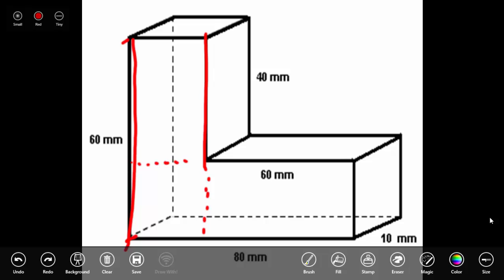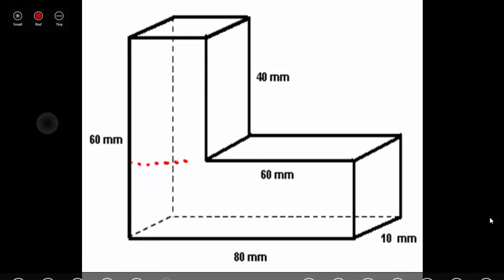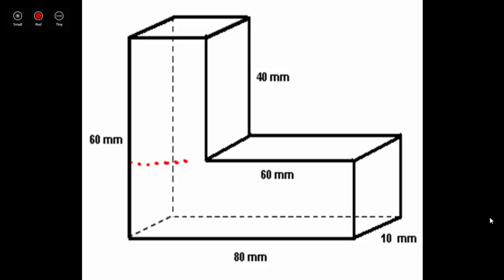Now let's go back to finding the volume, using the dimensions we've identified. We'll find the volume of each rectangular prism using those dimensions, and use clues to find any dimensions that aren't given. The formula for volume is: volume equals length times width times height. Let's start with the bottom rectangular prism and fill in the formula.